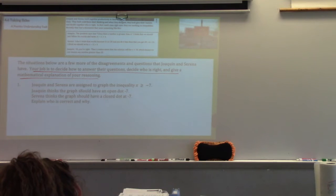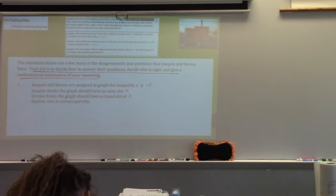We saw this idea that Joaquin and Serena are assigned to graph the inequality x is greater than or equal to negative 7. And Joaquin thinks the graph should have an open dot, and Serena thinks the graph should have a closed dot at negative 7. Who did we say was right yesterday? Serena, why is that?